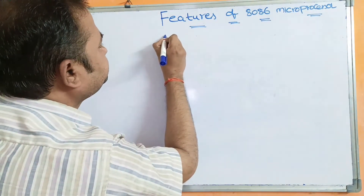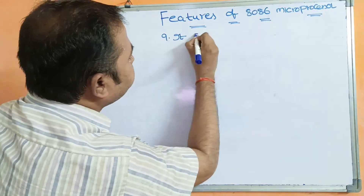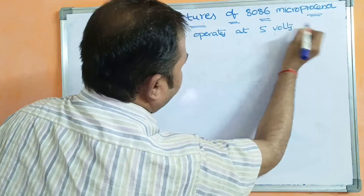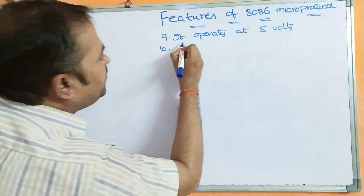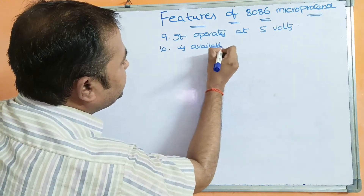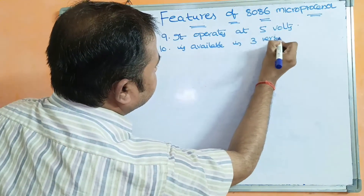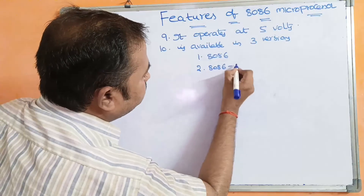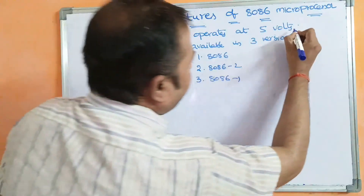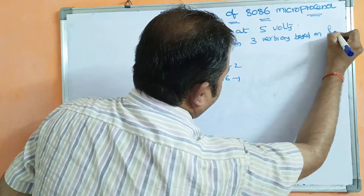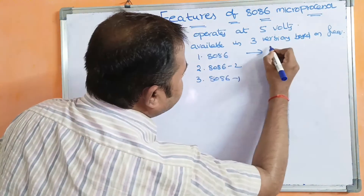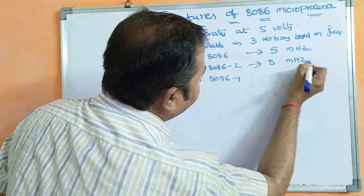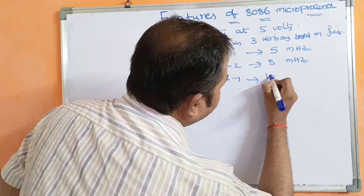The 8086 operates at 5 volts. It is available in three versions based on frequency: the standard 8086 operates at 5 MHz, the 8086-2 operates at 8 MHz, and the 8086-1 operates at 10 MHz.